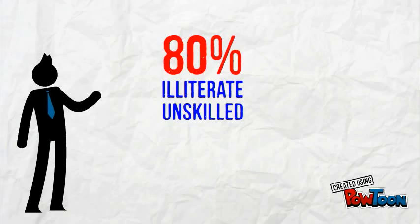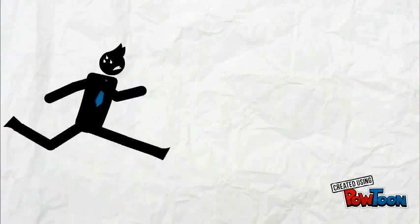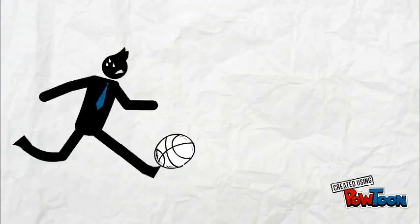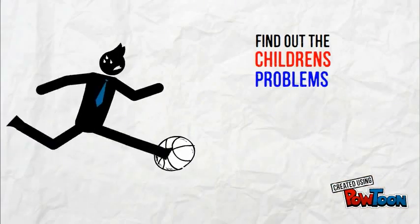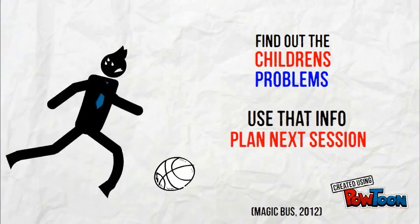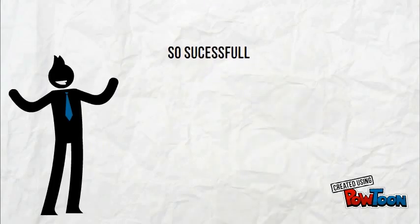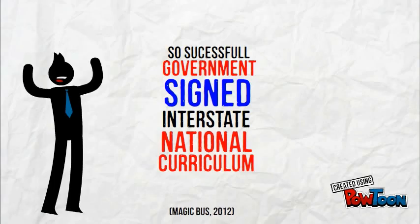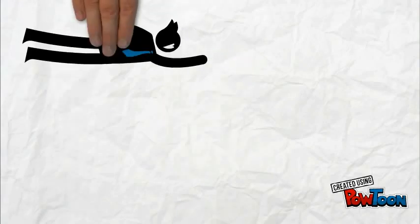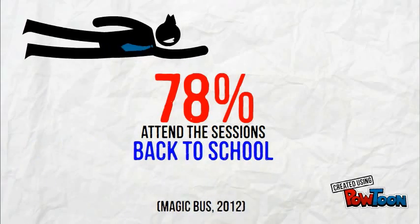Magic Bus wants to change all of this and have been doing successfully for over a decade. They use sport and structured play activities to attract the youth. Using games to find out the problems that the children are facing, they use that information to plan the next session. It has been so successful that the government signed to integrate the Magic Bus curriculum into the national curriculum. A massive 78% of children who attend the sessions go back to school. How amazing is that?